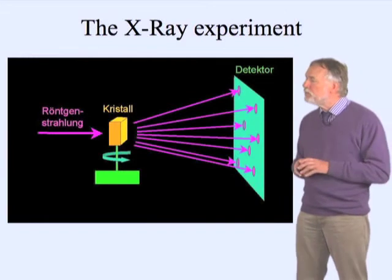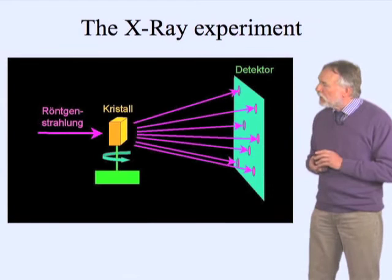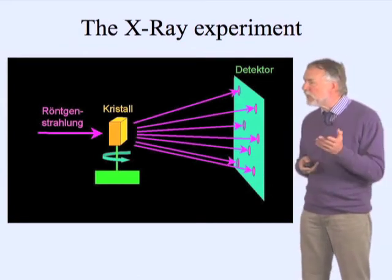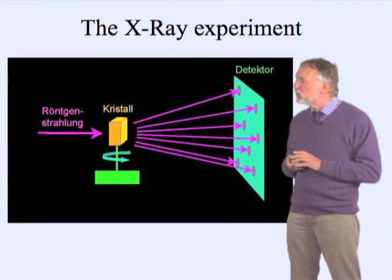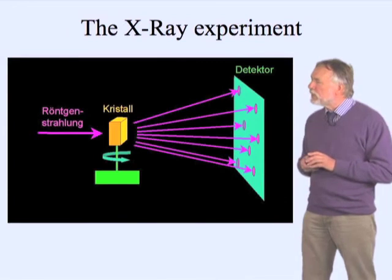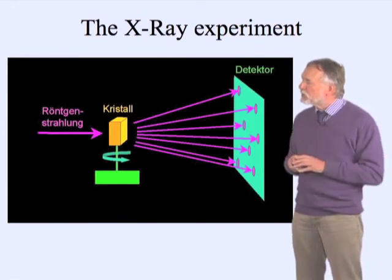You put them through an X-ray beam. Sorry, this is still a German slide—Mr. Roentgen discovered X-rays, and we call them Roentgenstrahlen, which means X-rays. You shine these X-rays through a crystal, and then the X-rays are diffracted.